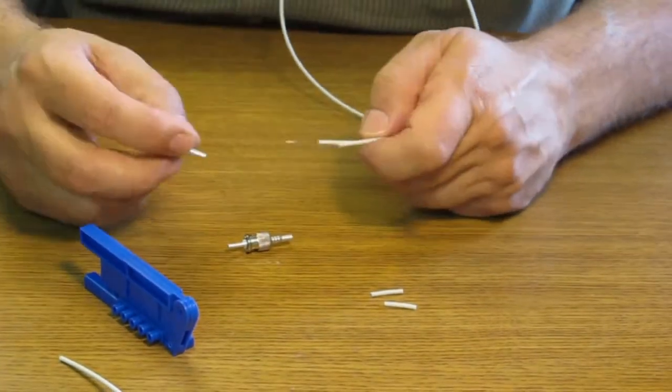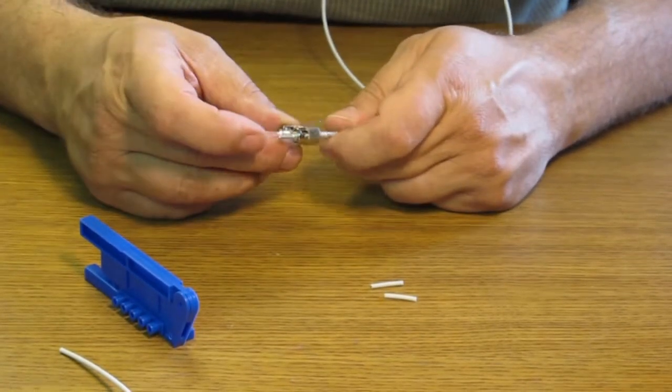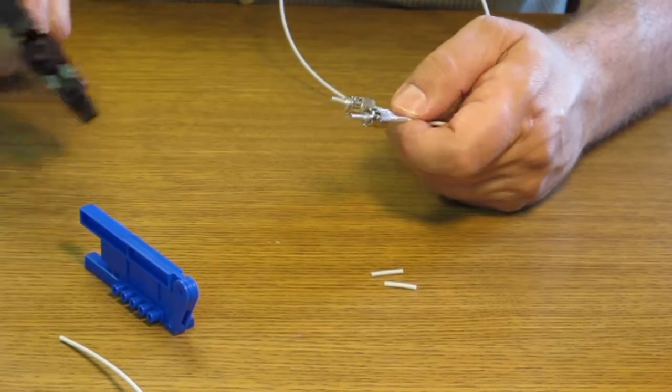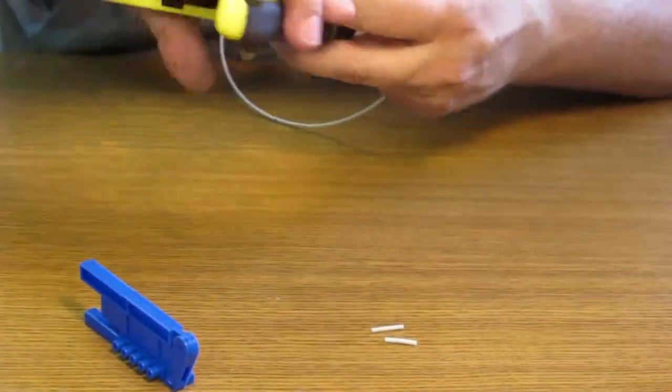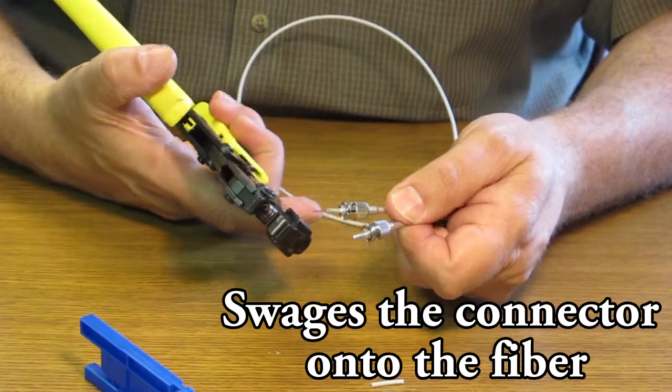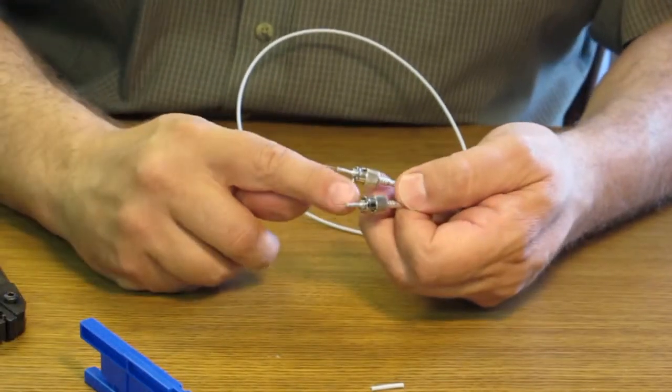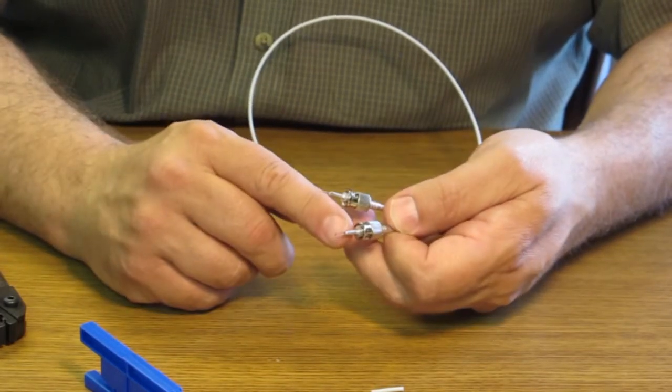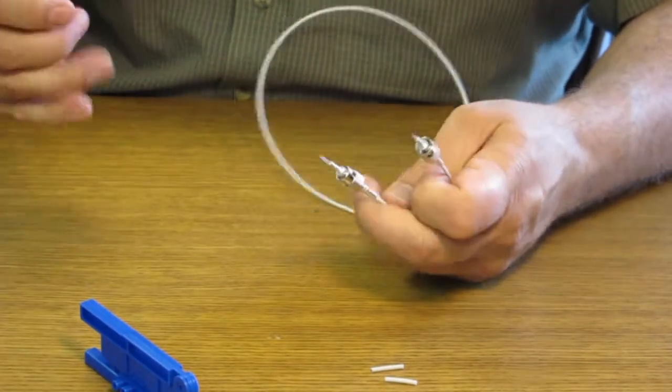So now we have the two ST connectors. These are a field installable connector that works with the FiberFin light seal swage tool. This tool swages the connector onto the fiber and it does that in a way that it deforms the aluminum ferrule uniformly over the top of the ferrule and holds it for approximately three millimeter and gives it friction so you don't have to use epoxy, which is very important in field termination.